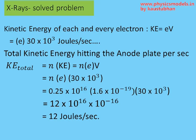The total kinetic energy of all electrons would be the total number of electrons into kinetic energy per electron, so that is n into E into V. That would be 0.25 times 10 to the power 16 into the charge per electron into the voltage 30 times 10 to the power 3, and you'll get 12 joules per second.